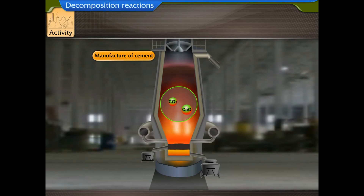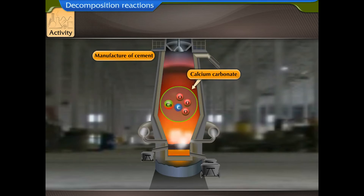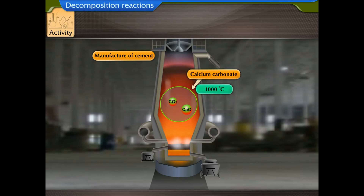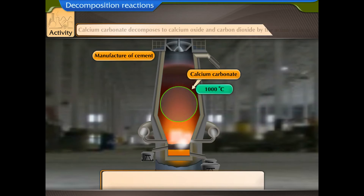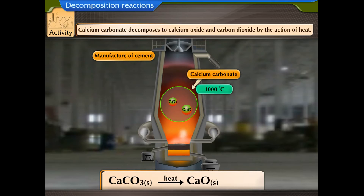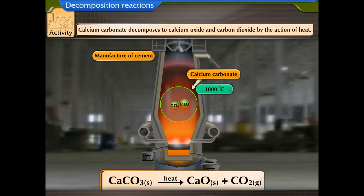In the manufacture of cement, calcium carbonate is heated at a temperature of 1000 degrees Celsius. At this stage, calcium carbonate decomposes to calcium oxide and carbon dioxide by the action of heat.